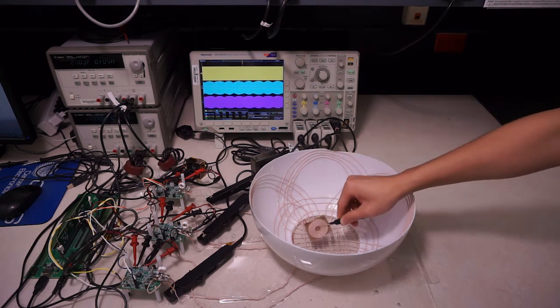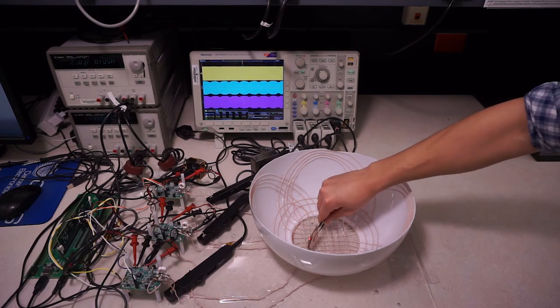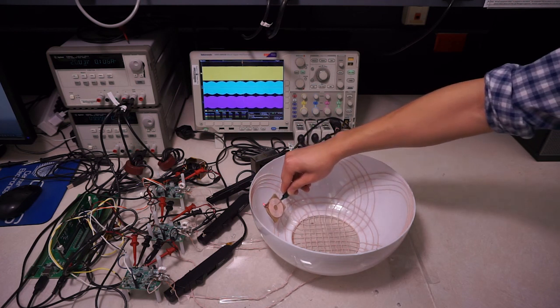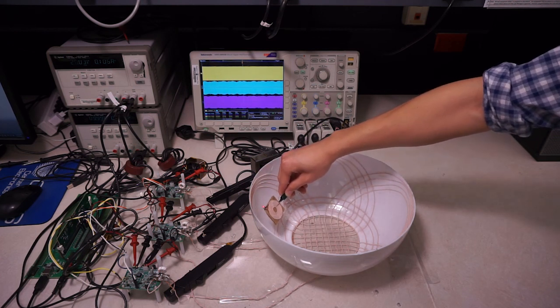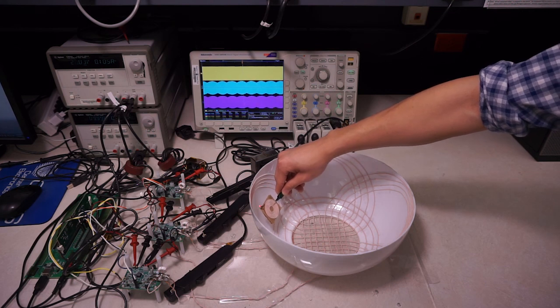Therefore, no matter how I place the receiver coil, the LED can always be lighted on. And also, as for the side face, when the receiver coil is perpendicular to the surface, it can be also lighted on.